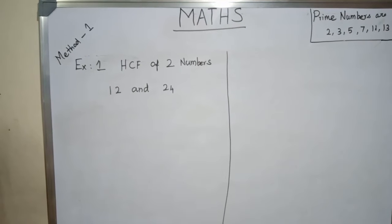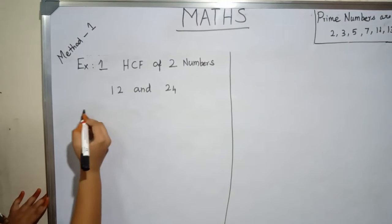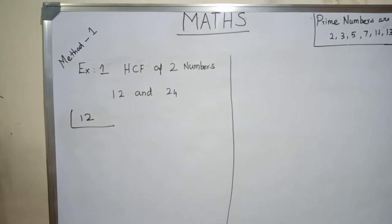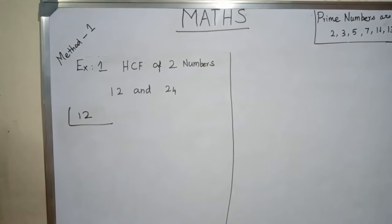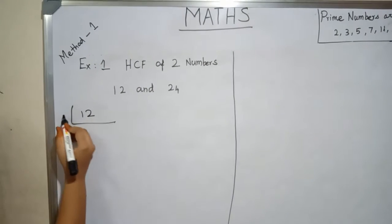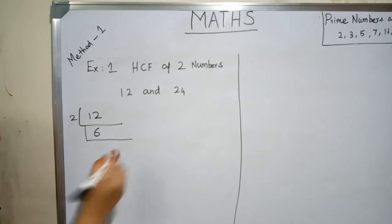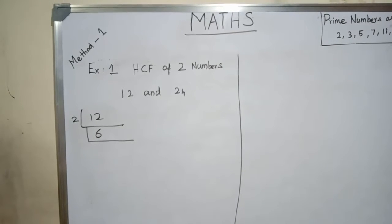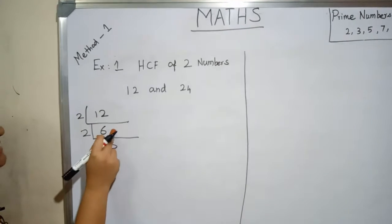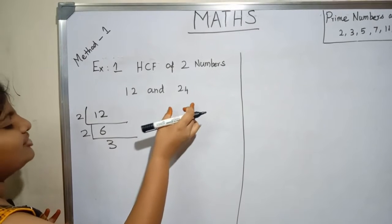Now we can see the HCF of two numbers. Example: 12 and 24. We take 12 and write it here. The smallest prime number is 2. Whether 12 is divisible by 2 — yes, because it is an even number. 2 sixes are 12. Whether 6 is an even number — yes. 2 threes are 6. We stop here because 3 is a prime number.